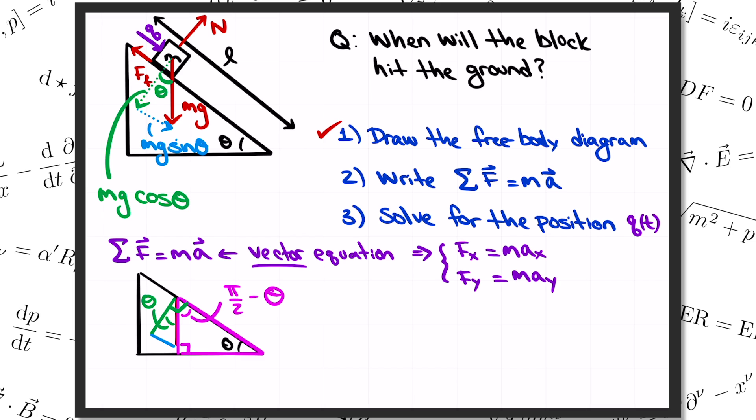So the forces that point along the direction of the ramp are the parallel component of gravity, mg sine of theta, and the friction force. Then the F equals ma equation for q can be written mg sine of theta minus friction, which I'll write as f sub f equals m times a, the acceleration of q. In the perpendicular direction, we have the normal force N and the perpendicular component of gravity, mg cosine of theta. So F equals ma in that direction says that N minus mg cosine of theta equals zero. It's set to zero because the block is stuck moving along the surface of the ramp. It can't fly off or fall through.